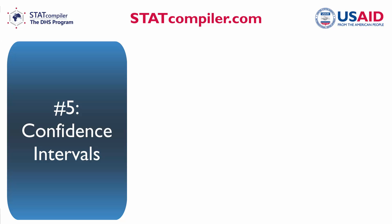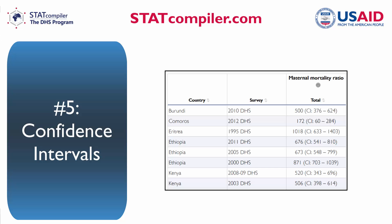Number 5. Confidence intervals have been added for two indicators: maternal mortality ratio and HIV prevalence. As these are relatively rare events, the data points often have large errors, and it is difficult to interpret trends without knowing the confidence intervals. The confidence intervals are automatically included in all visualizations when you select one of these indicators.